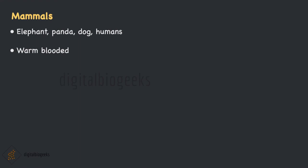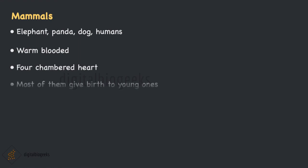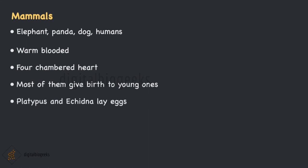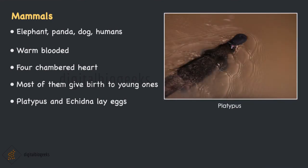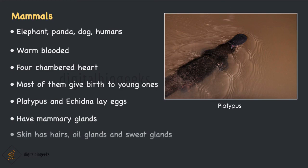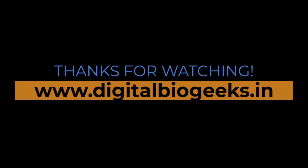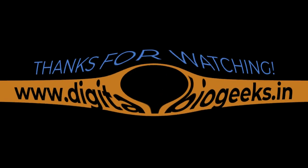Most mammals are intelligent and some possess large brains. They are warm-blooded animals that can maintain a constant body temperature regardless of their surroundings. They have a four-chambered heart. Most mammals give birth to their young ones; however, platypus and echidna lay eggs. Kangaroos give birth to very poorly developed young ones which develop further in the pouch outside the body. They have mammary glands for the production of milk to nourish the young ones. Their skin has hairs, oil glands and sweat glands. That's it about this chapter: Diversity in Living Organisms. If you like this video, please share it with your friends. Thank you.